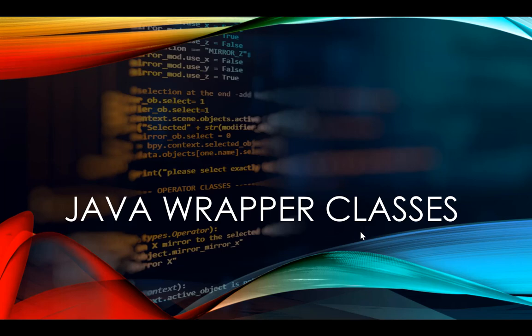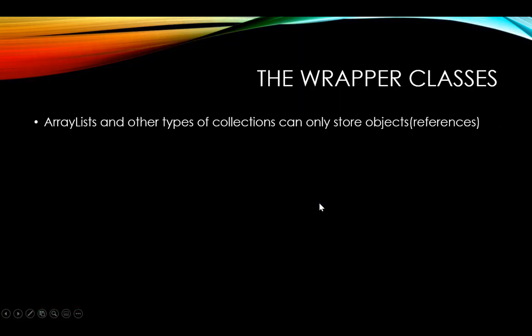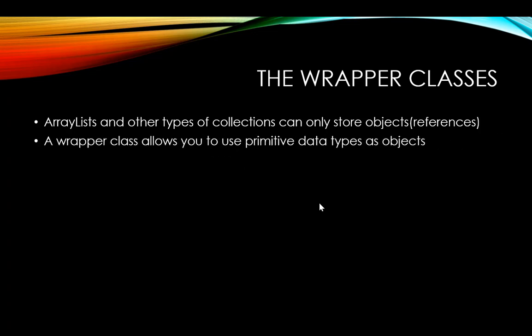In this video we will look at the Java wrapper classes. In ArrayLists and other types of collections we can only store object references — primitive data types are not something we can use in those collections. The wrapper class will allow us to use these primitive types as objects, enabling us to use primitive data types inside our ArrayLists and collections. The wrapper class wraps the value of the primitive data type into an object.